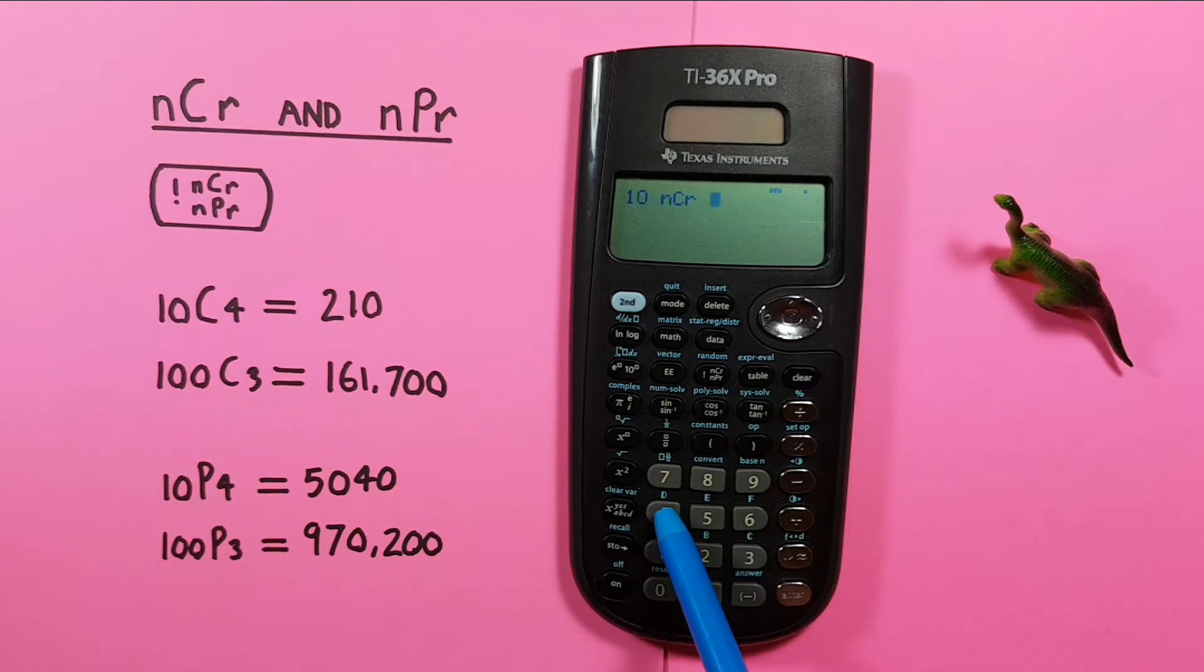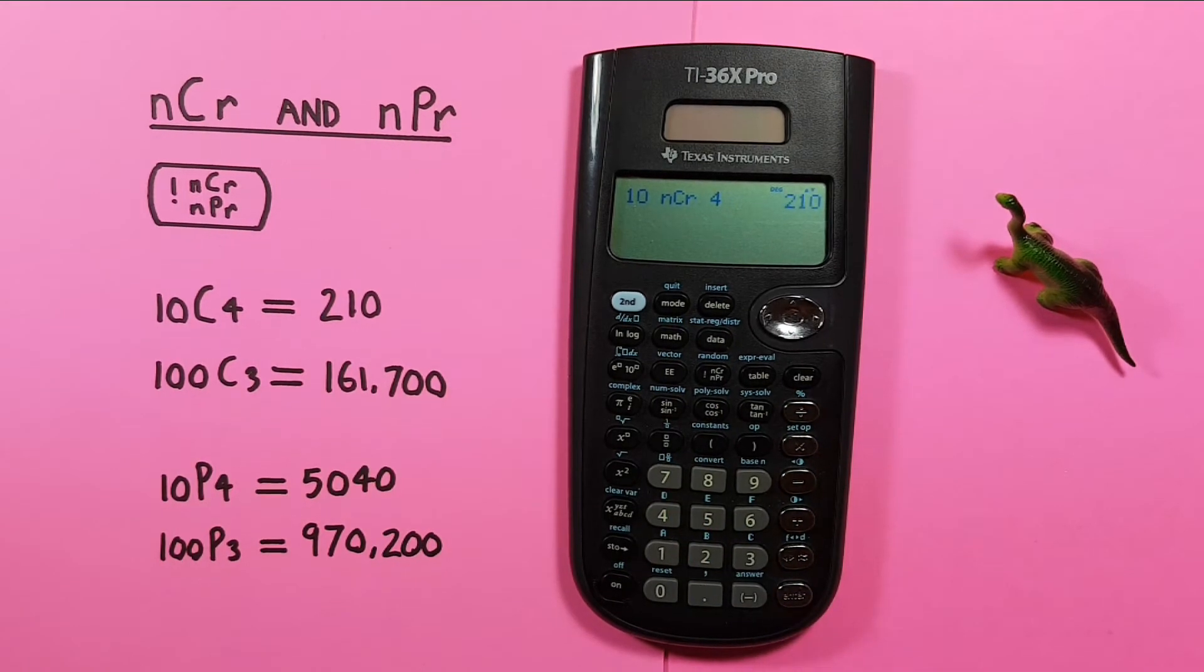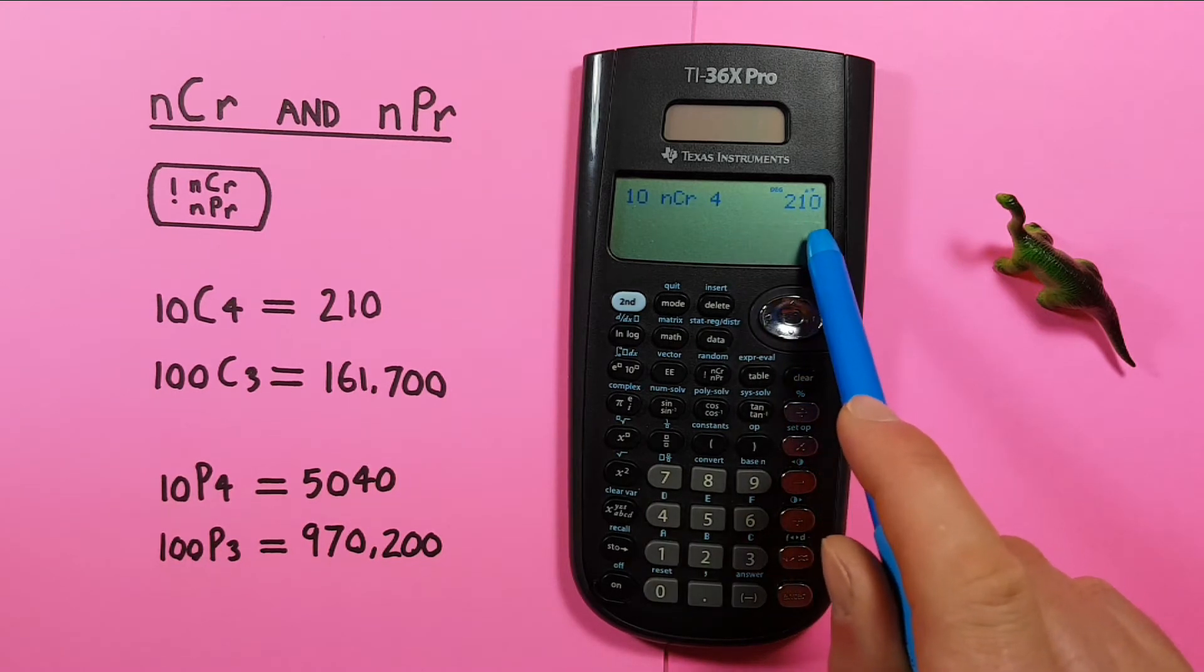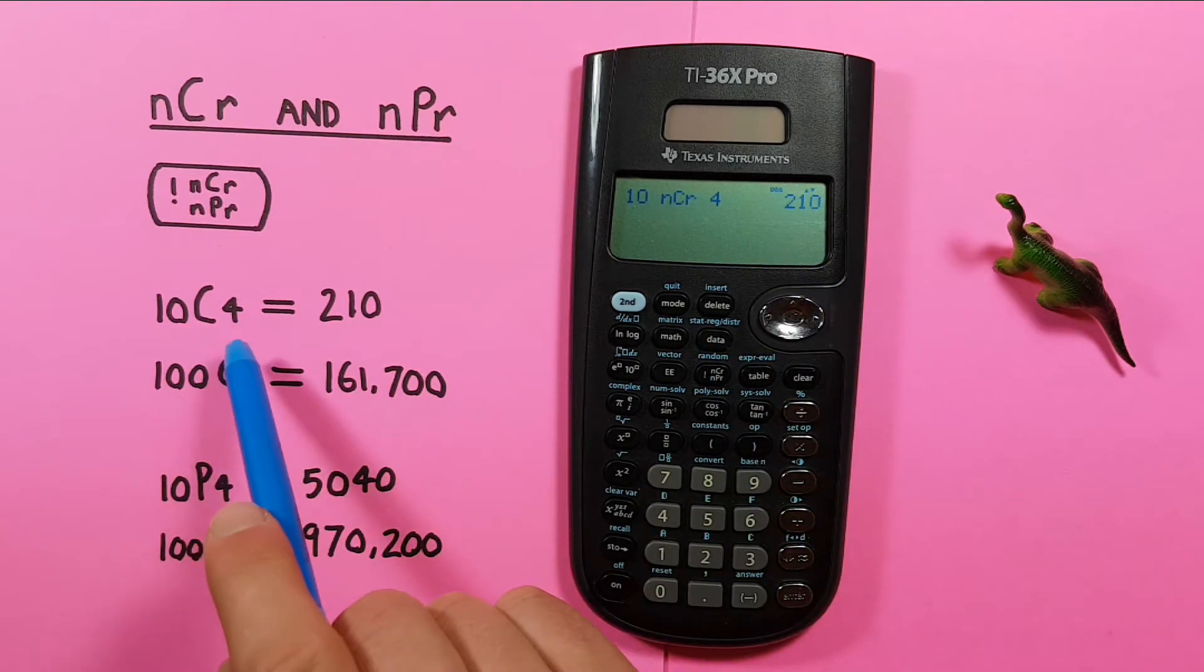We then place the 4 and press enter, and see there are 210 possible combinations when choosing 4 from a set of 10.